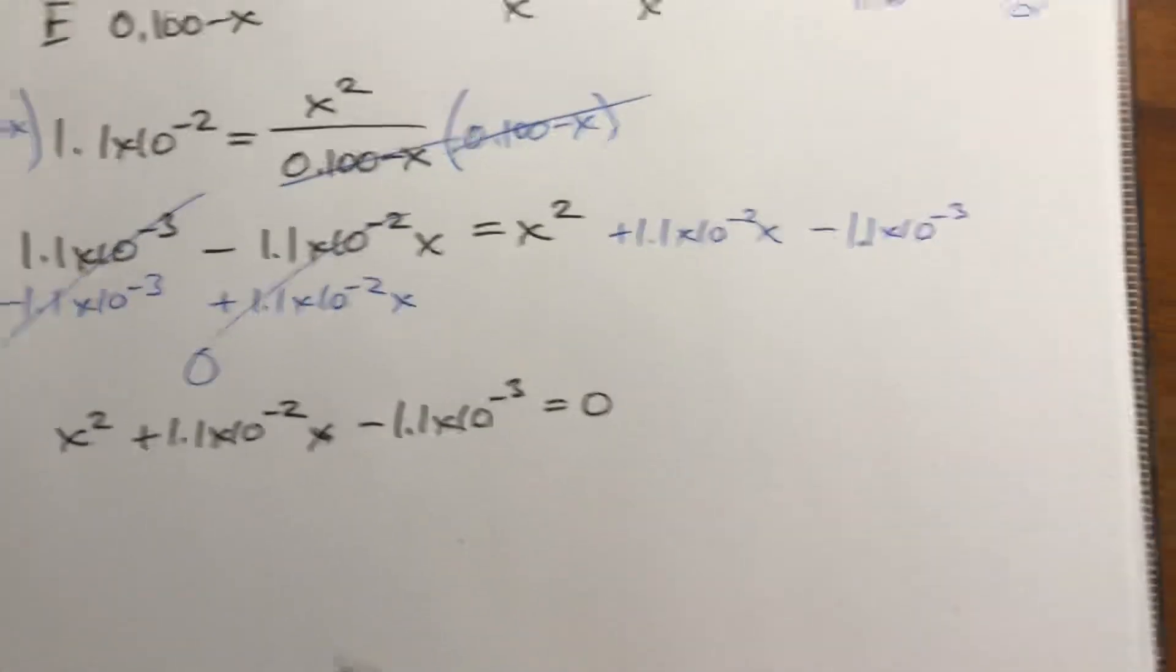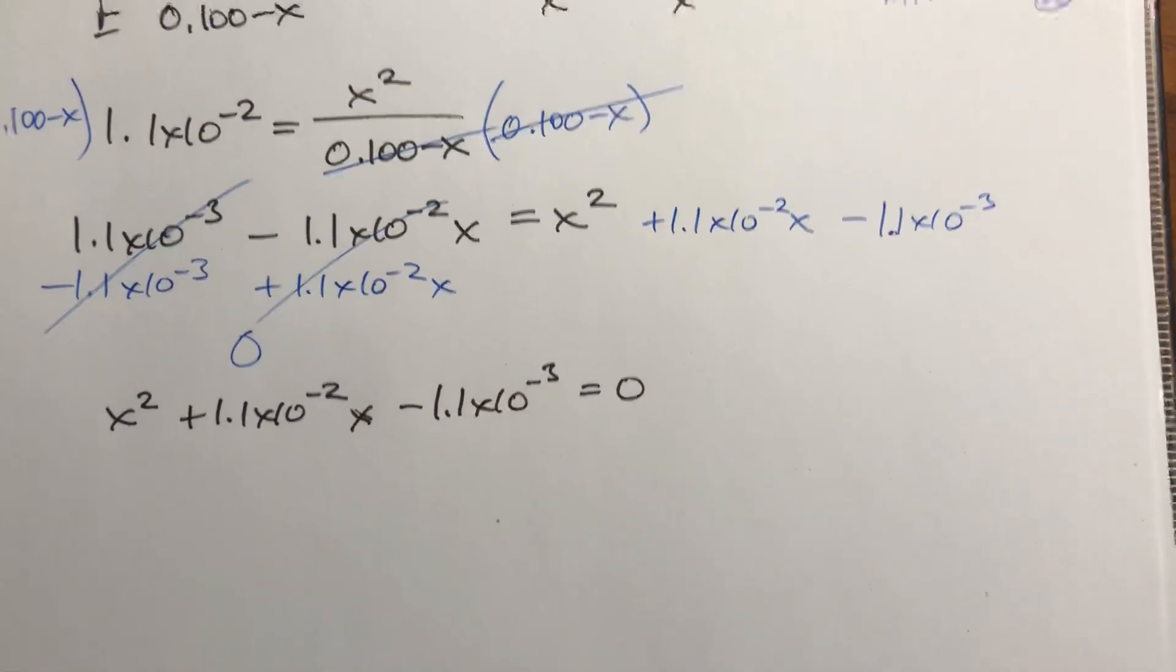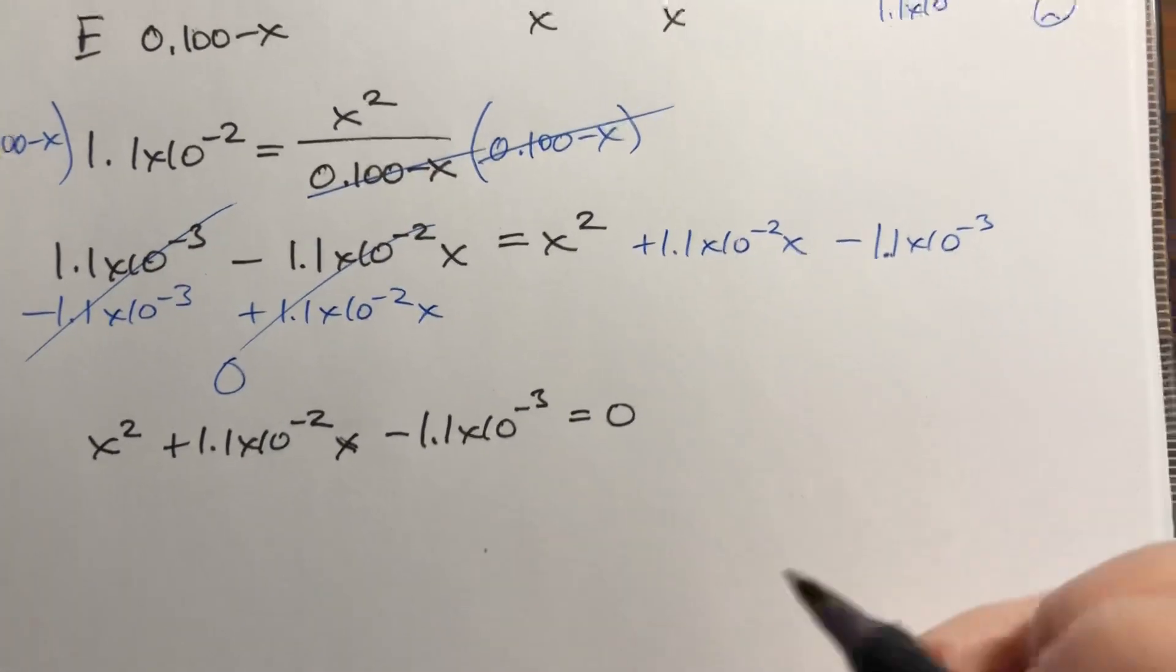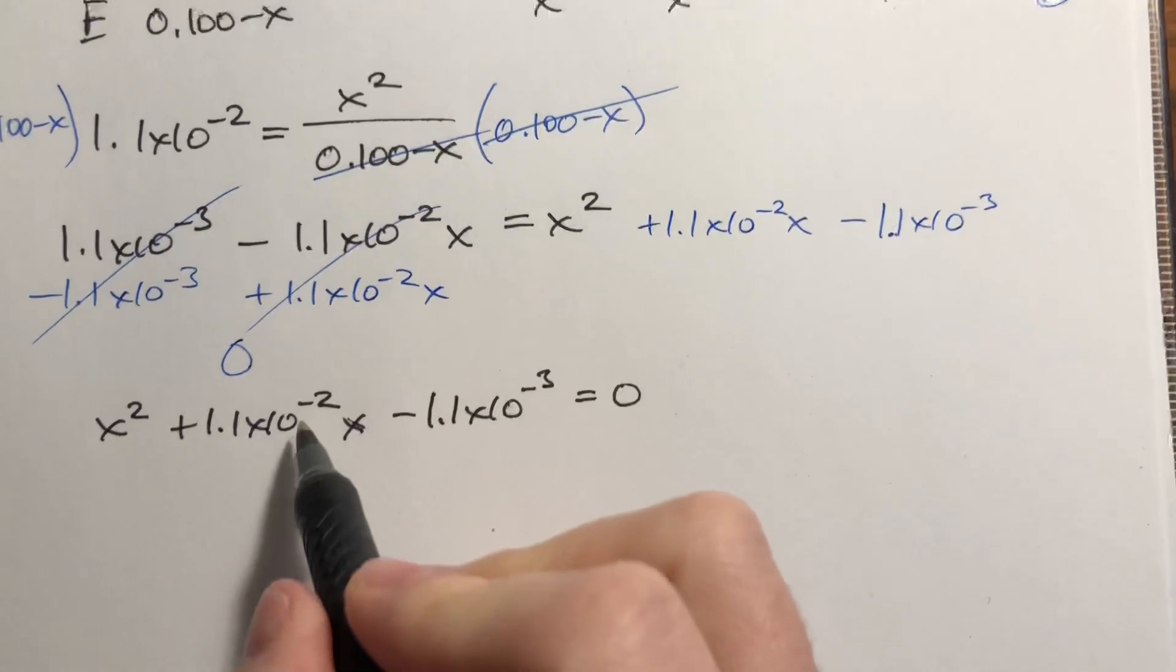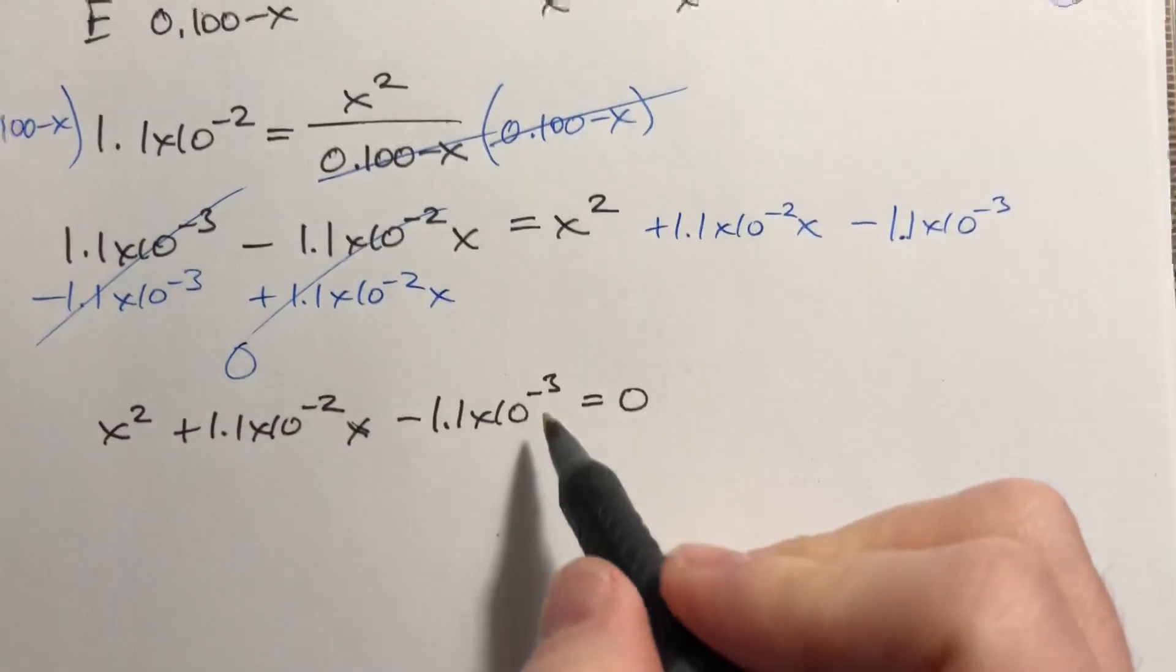So we have the quadratic equation, which we saw in the previous problem. A is going to be 1, B is going to be positive 1.1 times 10 to the negative second, and C is negative 1.1 times 10 to the negative third.